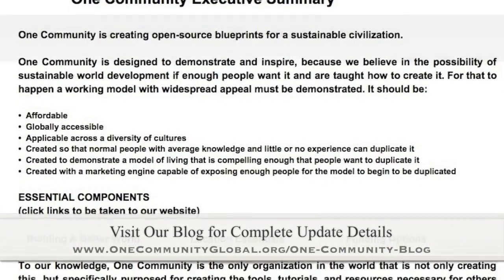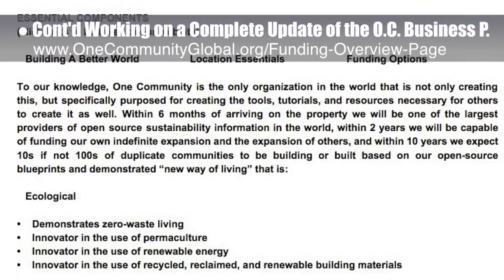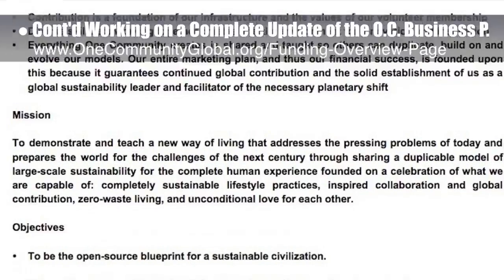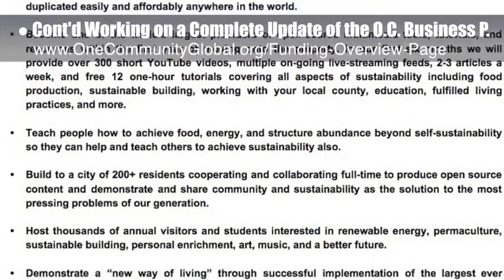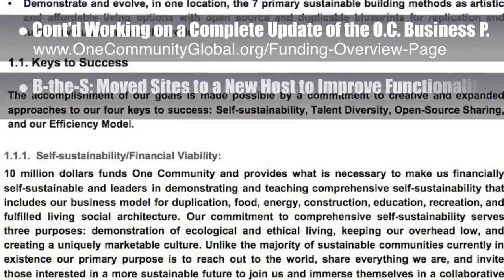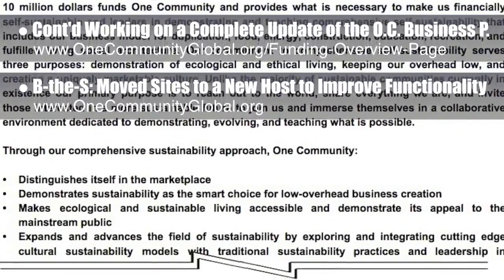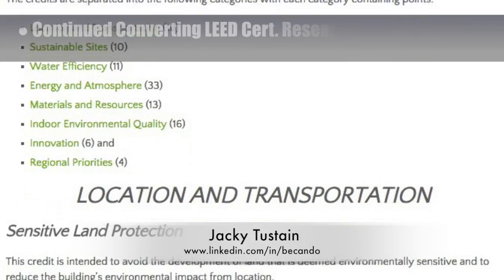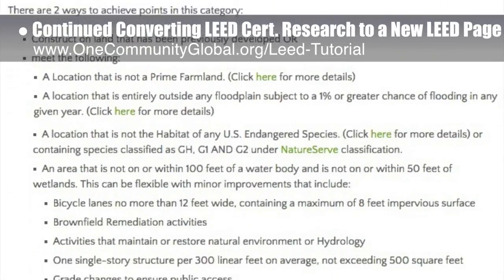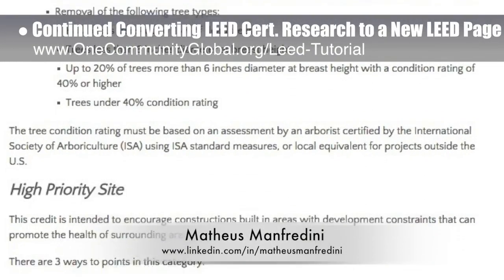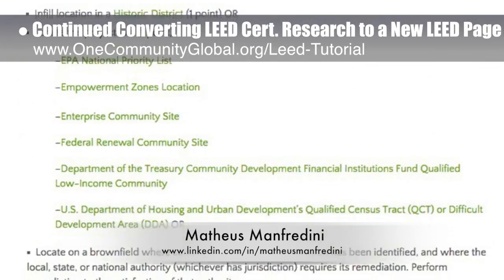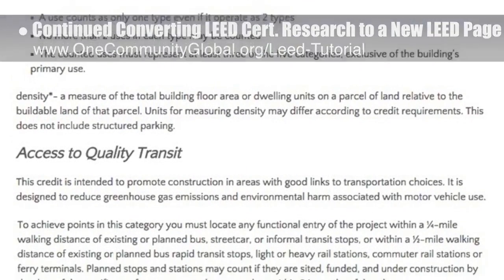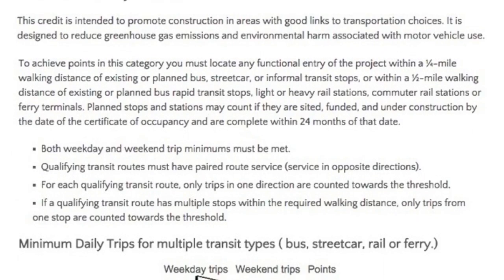This last week the core team continued working on a complete update of the One Community business plan. What you see here is our second week of reformatting the plan on a Google Doc for easier collaboration and sharing — we're about 8% done with the complete rewrite. Behind the scenes, we also moved our sites to a new host to improve functionality. Jackie Testain, project manager, also continued helping convert the LEED certification research done by Matthias Manfredini, civil engineering student and urban design coordinator, into a web page — we're about 25% complete with this tutorial.